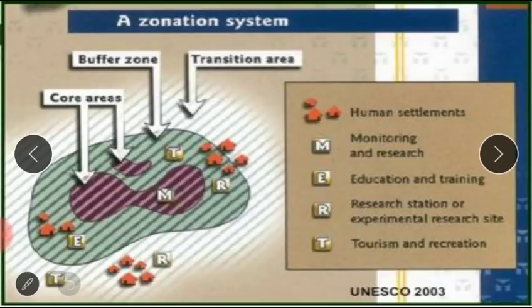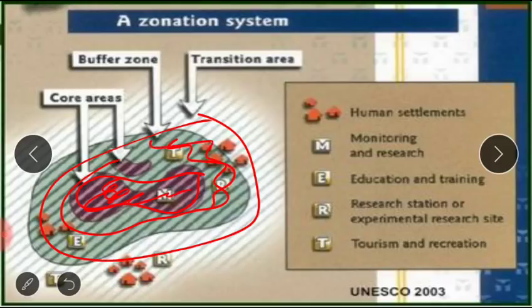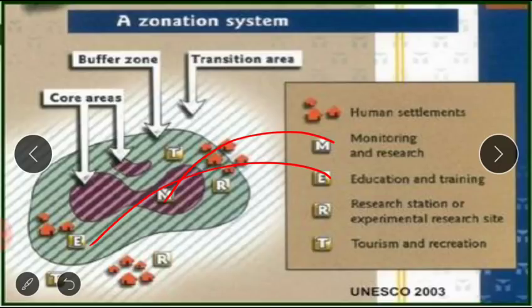Looking at the diagram — I have used these images from various sources for educational purposes only and claim no copyright. The Core Area is the protected, secure area. The Buffer Zone allows research and monitoring. The Transition Zone allows economic activities and tourism. In the diagram, 'M' indicates monitoring and research in the core area; education and training are shown in the buffer zone, along with experimental research sites; and economic activities like tourism are shown in the transition area.